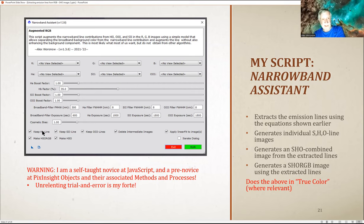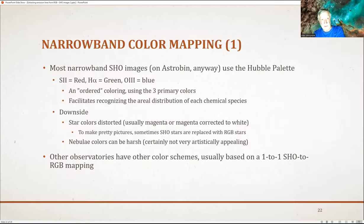The images that come out are the three extracted narrowband line images. It also makes an SHO RGB image according to the mixture sliders you specified, and an SHO image with true color mapping. Both output composites use what I call true color mapping.